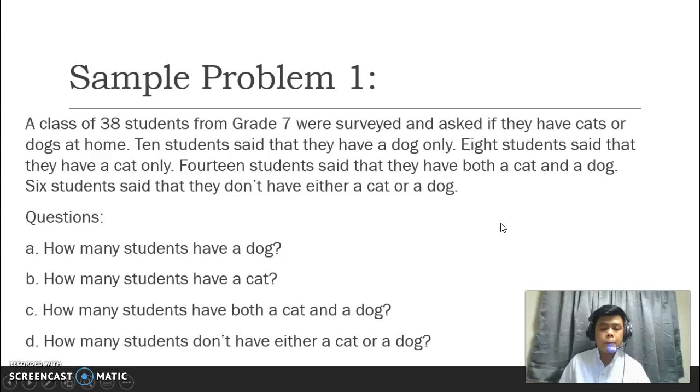Let's have a sample. Sample problem 1. I will read the problem. A class of 38 students from grade 7 were surveyed and asked if they have cats or dogs at home. Kapag sinabi natin surveyed, tinanong sila, kayo ba ay mga owner o meron ba kayong alagang pusa or aso sa bahay. Ang tinanong mga grade 7 daw. Sabi pa sa problem, 10 students said that they have a dog only. 8 students said that they have a cat only. 14 students said that they have both a cat and a dog. 6 students said that they don't have either a cat or a dog.